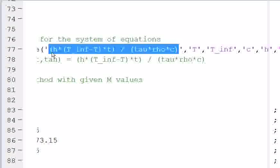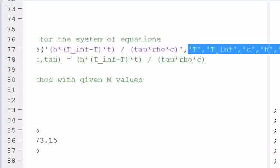So it's a pretty simple equation. We have H times the change in temperature, T infinity minus T times time divided by tau rho C. And then we're defining the order in which we're going to input the variables after that. You don't have to do this, but if you don't, it's sometimes hard to tell which variables need to go in which order. And if you get them messed up, then it's really annoying.